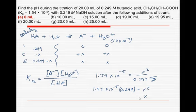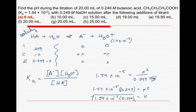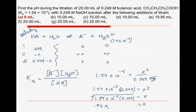X would be the square root of that value, all of that, 1.54 times 10 to the minus 5 times 0.249. All of that will give me the value of X. Turns out that X is equal to 1.96 times 10 to the minus 3.